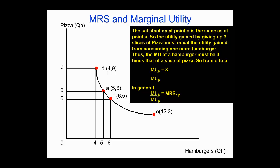How can we relate the marginal rate of substitution to marginal utility? The satisfaction at point D is the same as at point A — this consumer is indifferent between point D and point A. So the utility gained by giving up three slices of pizza must equal the utility gained from consuming one more hamburger. The marginal utility of a hamburger must be three times that of a slice of pizza. From D to A, the marginal utility of a hamburger over the marginal utility of a slice of pizza equals three — the same as the marginal rate of substitution. So the marginal utility of hamburgers over the marginal utility of pizzas equals the marginal rate of substitution of hamburgers for pizzas.